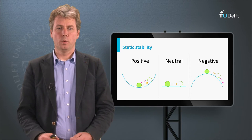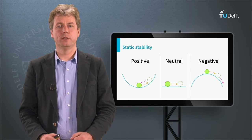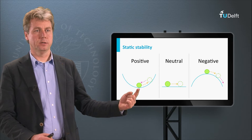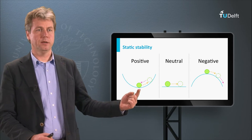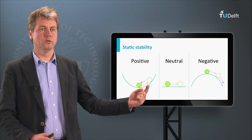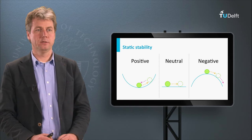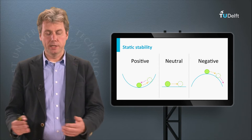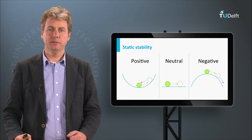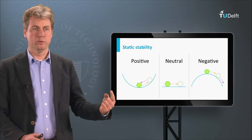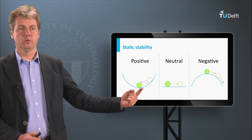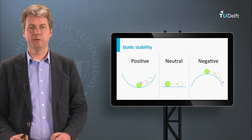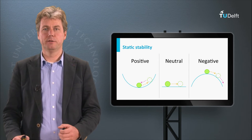Static stability is whether something returns to its equilibrium. For instance, when we have a ball in the center of a dent, if it is moved to the side, there is automatically a reaction which returns it to its original state. For positive stability, we want a reaction with an opposite sign to the original deviation. If we move it to the right, the reaction pushes it back to the left, back to the center. That's what we call positive static stability.